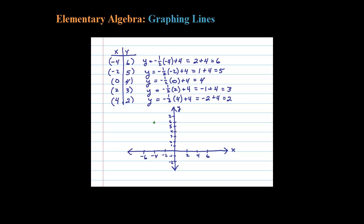Let's plot the points. -4, 6 lands right about there. -2, 5 lands right about there. 0, 4, there's my y-intercept. Then 2, 3, and 4, 2. Notice they all lined up.